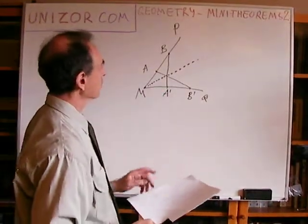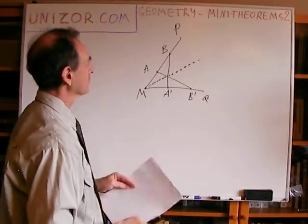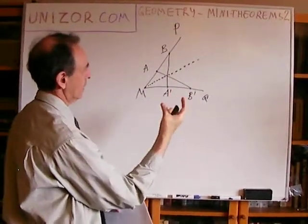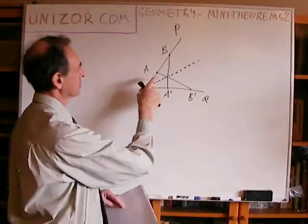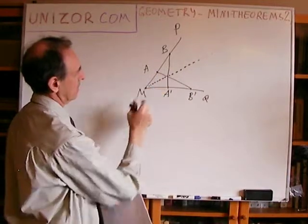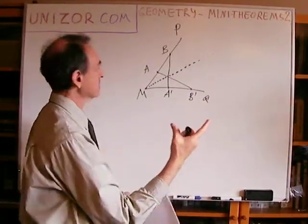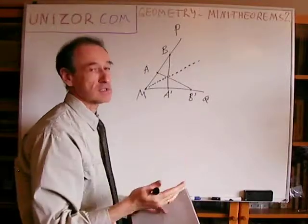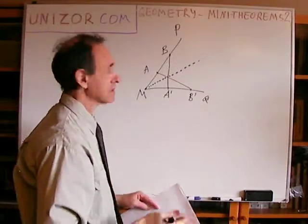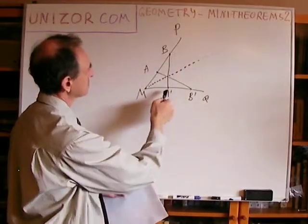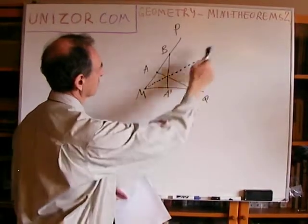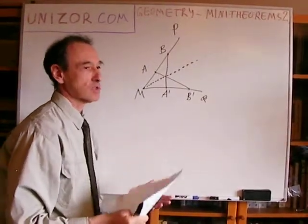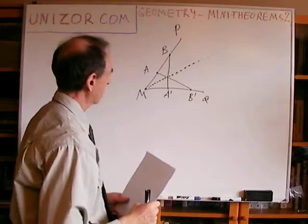If we prove this theorem, here is how to construct the angle bisector: set a compass to some distance and mark MA and MA prime equal. Then use another compass setting to mark MB and MB prime equal — both settings are completely independent and can be anything. Draw lines from B to A prime and from A to B prime. Their crossing point lies on the bisector. Then draw the bisector from M through this crossing point. It is an easy way to construct an angle bisector.